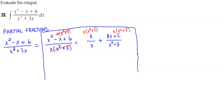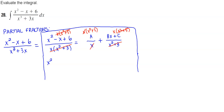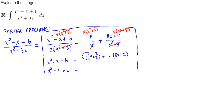We eliminate the denominators: eliminate x for the first fraction and x squared plus 3 for the second. Therefore, we get x squared minus x plus 6 equals A times x squared plus 3, plus x times Bx plus C. Distributing, we have ax squared plus 3a, and then distributing the x gives bx squared plus cx.